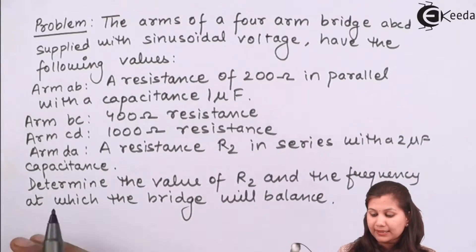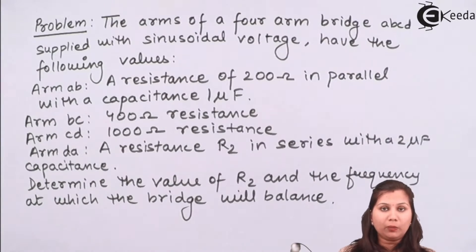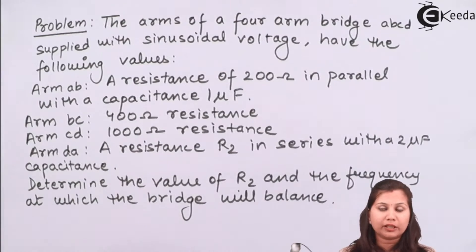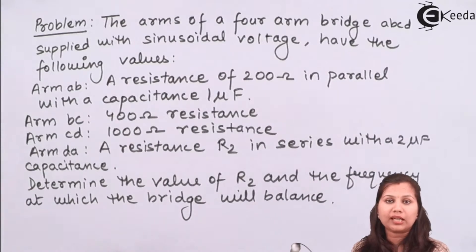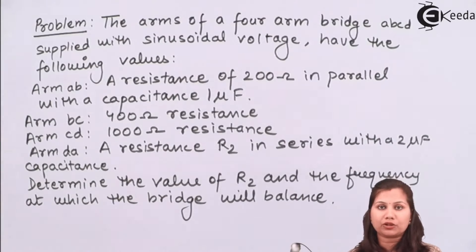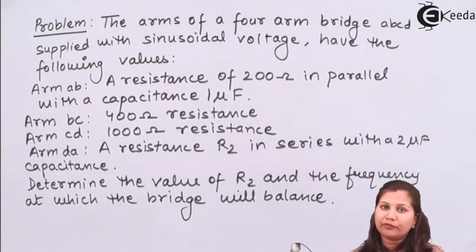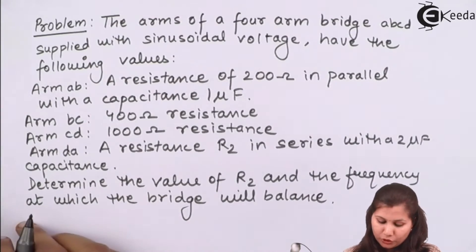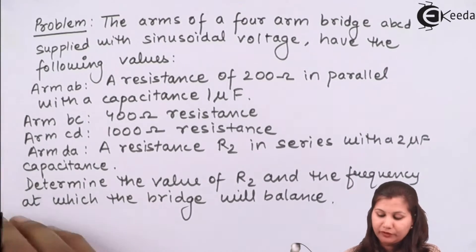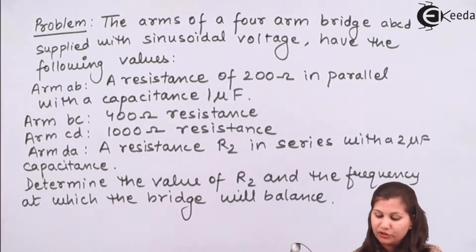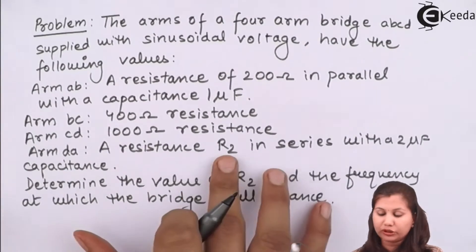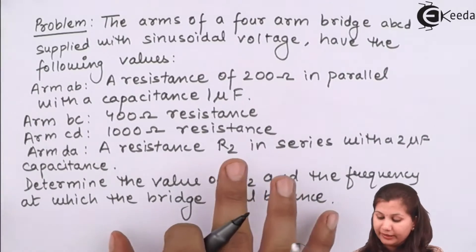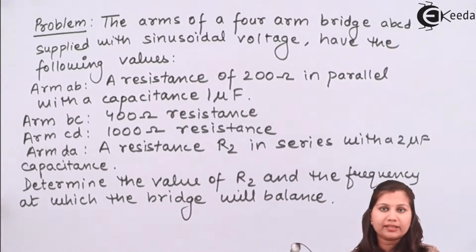Since this bridge is used to measure frequency, it is clearly a Wein's bridge, because Wein's bridge is the only AC bridge used for the measurement of frequency. We will first draw the circuit for the Wein's bridge, then derive the equation for resistance R2 and calculate its value.